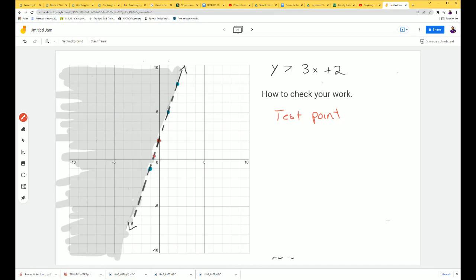I'm going to go with, I see negative 5, 5. So I'm going to do negative 5, 5. And I'm going to plug that in to my equation. So here we go. So y is greater than 3x plus 2. Now this is my x, and this is my y. I'm going to substitute this y right here.